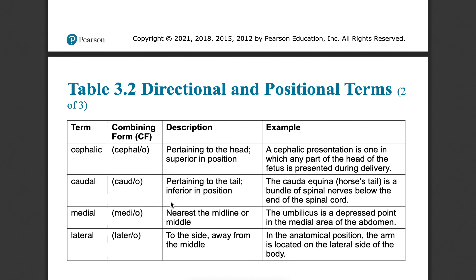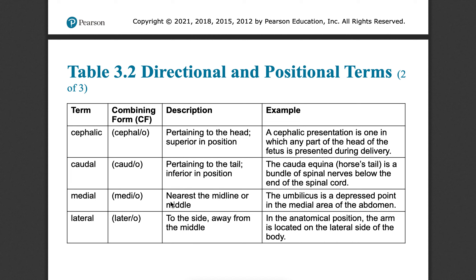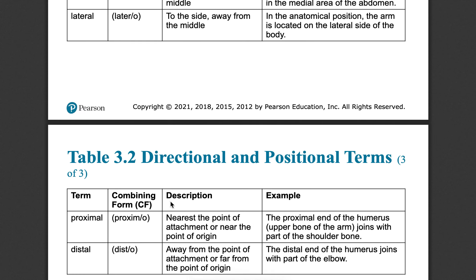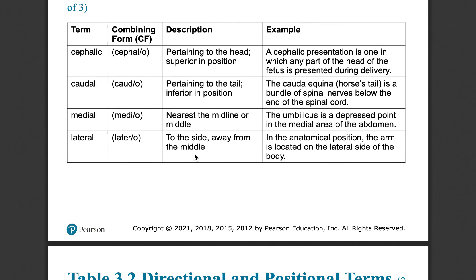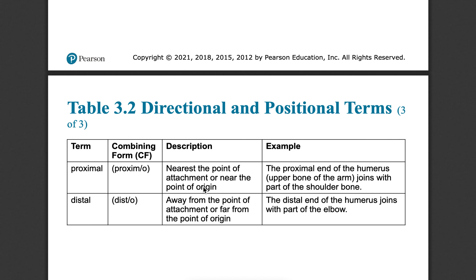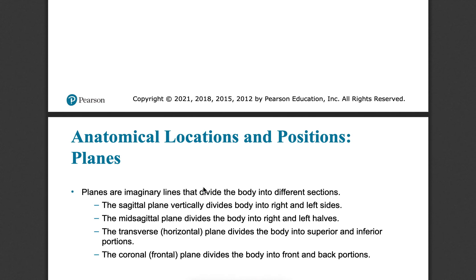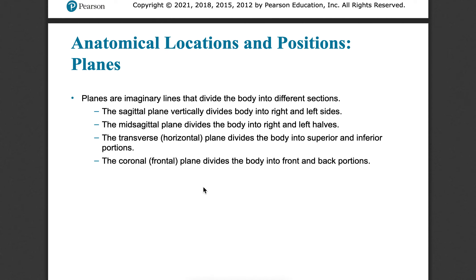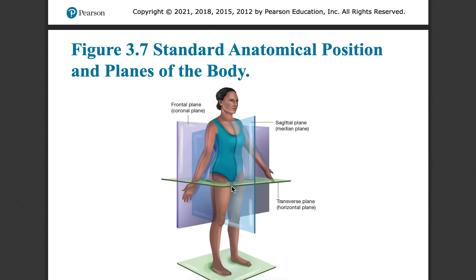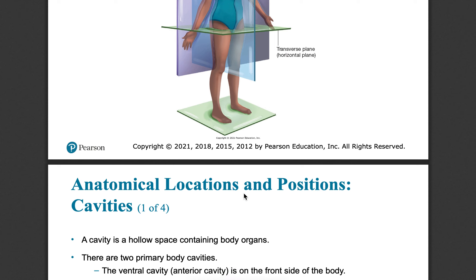There are many directional terms to get familiar with because you'll use them constantly in this course and others — lateral, medial, proximal, and distal. Additionally, you look at body planes: the sagittal plane cuts you left to right, the frontal plane cuts you front to back, and the transverse plane cuts you from top to bottom. Anatomical position and planes together determine the meaning of the terms you encounter.